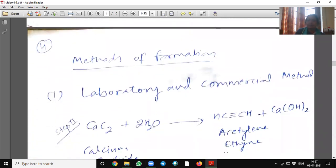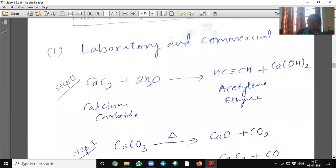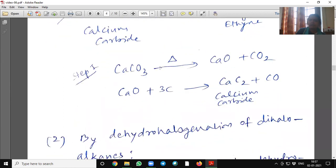Methods of formation. Laboratory and commercial method. From calcium carbide. On hydrolysis of calcium carbide, we will get acetylene or ethyne molecule plus calcium hydroxide. This calcium carbide is obtained from calcium carbonate on heating at 1200 degree centigrade temperature. It will convert into calcium oxide and carbon dioxide.